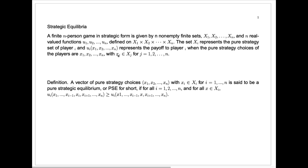Most of the time we're going to be talking about two-player games, but this generalization for n-player general sum games is relatively straightforward. In this context of n-player general sum games in strategic form, what do we mean by a pure strategic equilibrium?